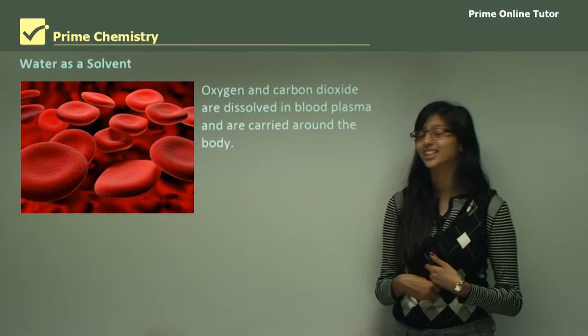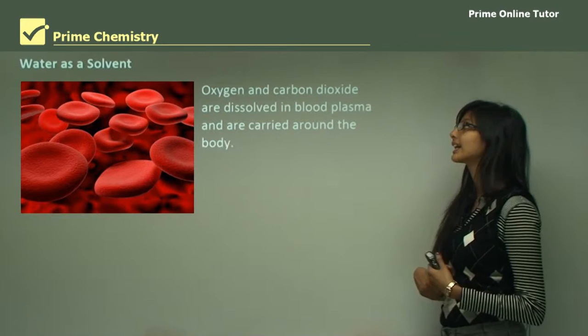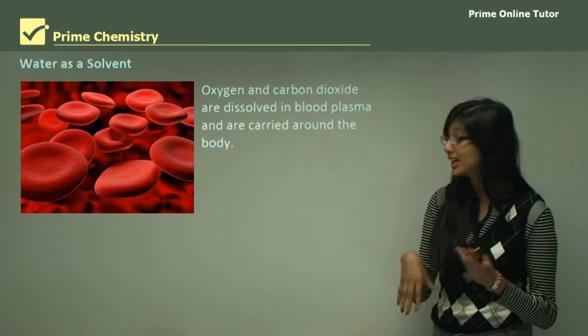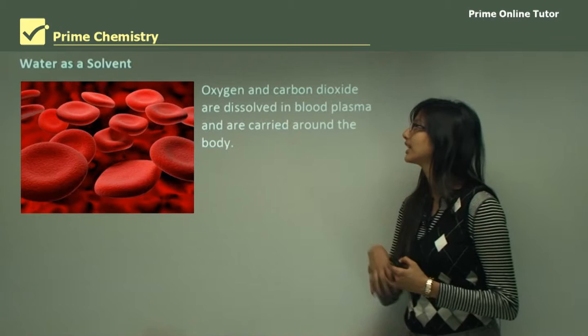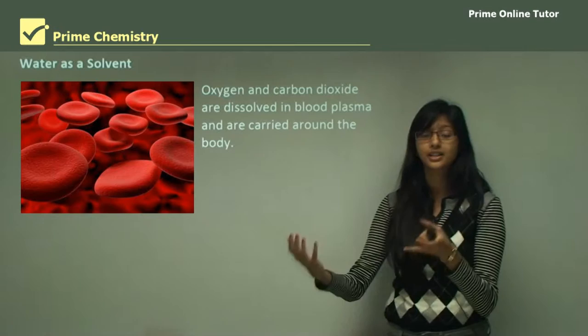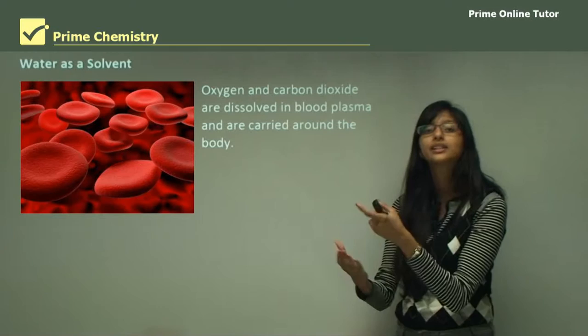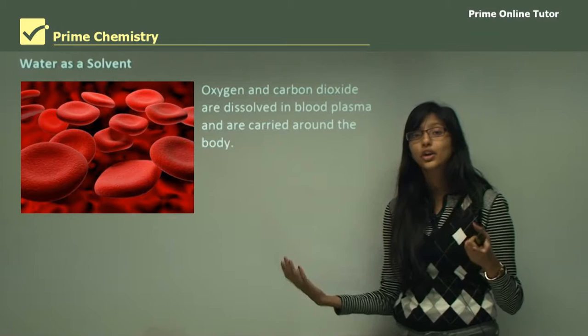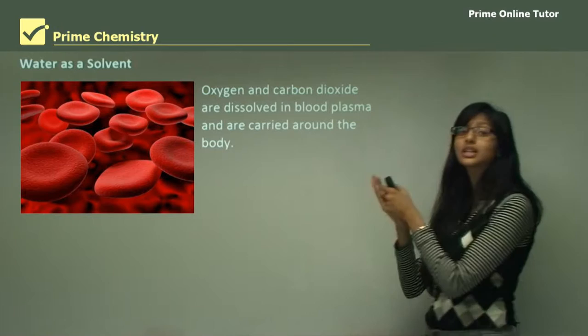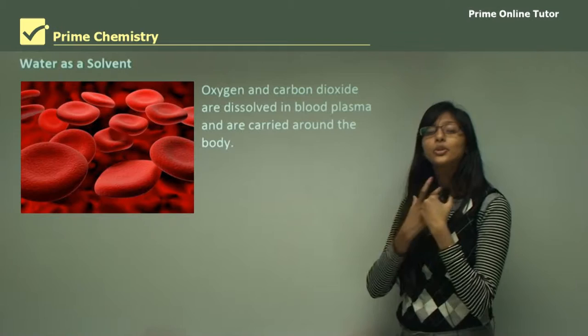Now let's look at the role of water as a solvent in our body. Oxygen and carbon dioxide are dissolved in blood plasma and carried around the body. Blood plasma consists of 90% water, and substances such as oxygen and carbon dioxide dissolve in that blood plasma and are carried to different parts of our body. Oxygen is carried to the cells, where metabolic reactions such as respiration occur. One of the waste products of respiration is carbon dioxide, which is dissolved back into the water in the blood plasma and carried to our lungs to be breathed out.